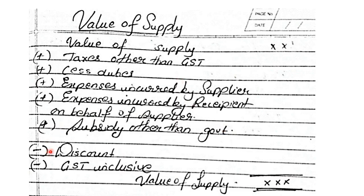From the gross value of supply, we need to subtract any discount given, and also subtract any GST which is already inclusive. If your original value of supply contains GST, we first remove the GST to get the gross value. Then on the final value of supply, we charge GST again. So value of supply equals all additions minus discount and inclusive GST if any — whatever net amount remains is your value of supply.